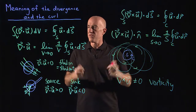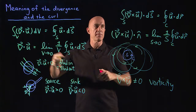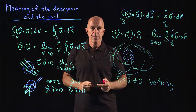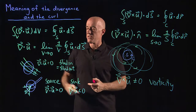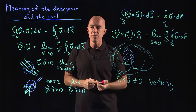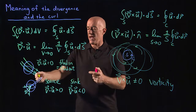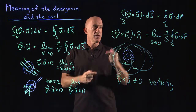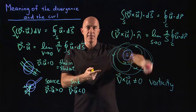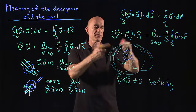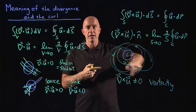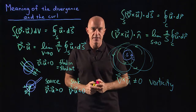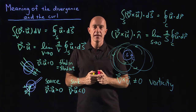To review: the divergence theorem and Stokes theorem give us coordinate-free definitions of both the divergence and the curl, along with physical meaning. The divergence of a vector field is zero for an incompressible fluid — whatever flows in through a surface flows out — but sources and sinks produce non-zero divergence inside a volume. The curl is non-zero when there's swirling motion in the fluid; the curl of a vector field is what's called vorticity, related to the swirl of the field. I'm Jeff Chasnov, thanks for watching, and I'll see you in the next video.